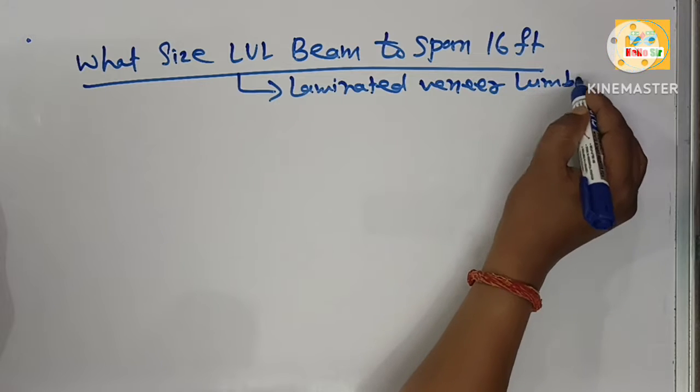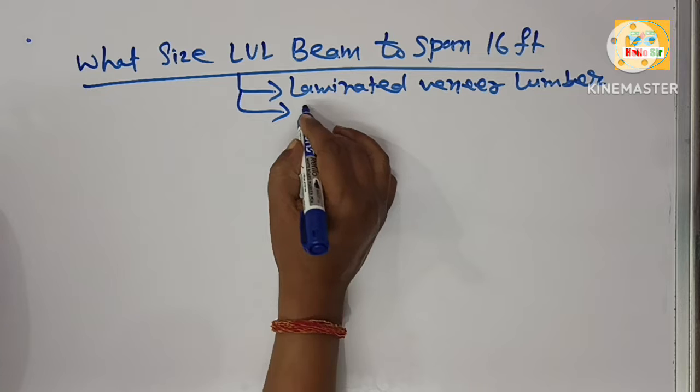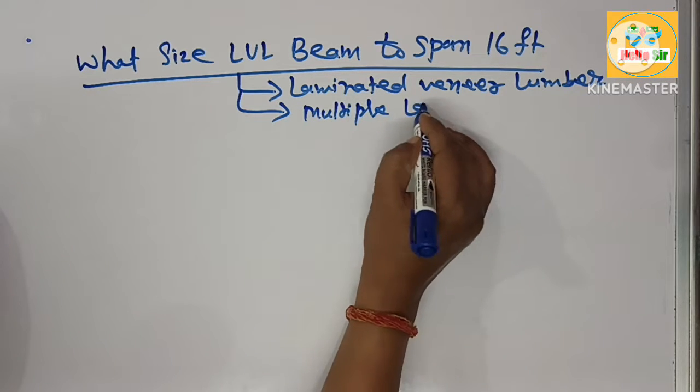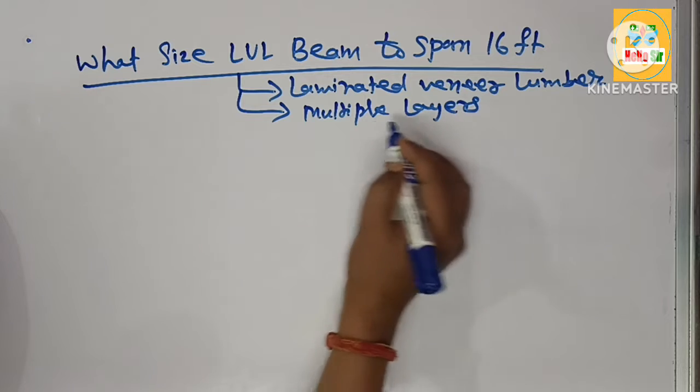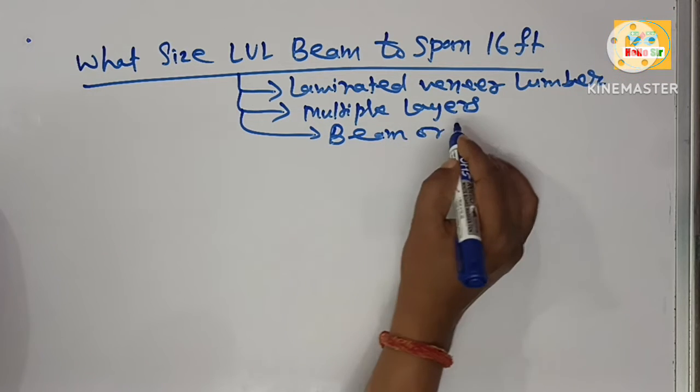LVL is made from multiple layers of thin sheets of wood, multiple layers used in building construction as beam or header.